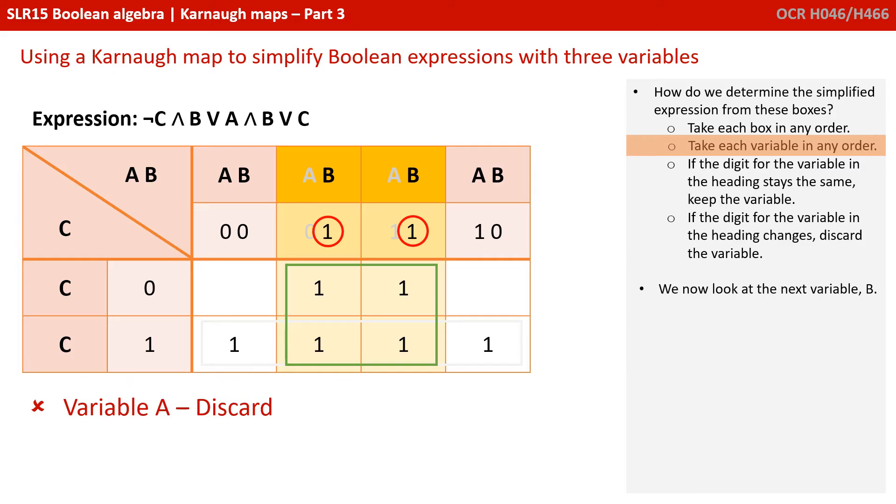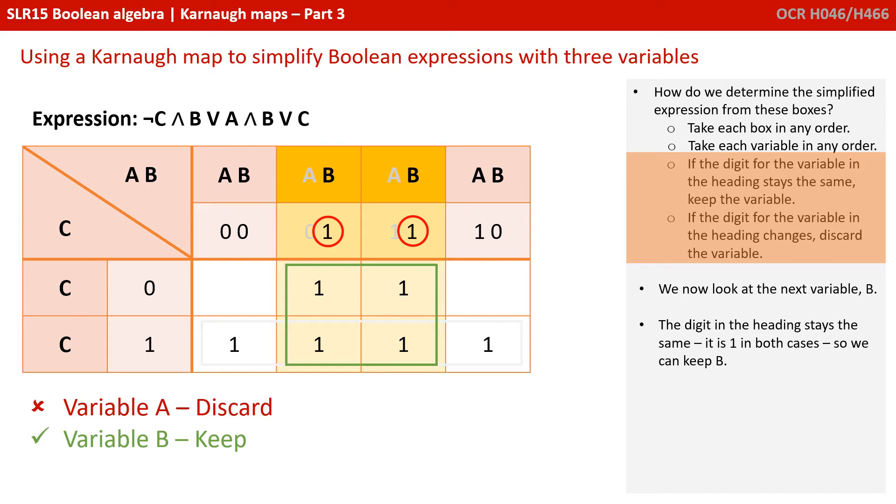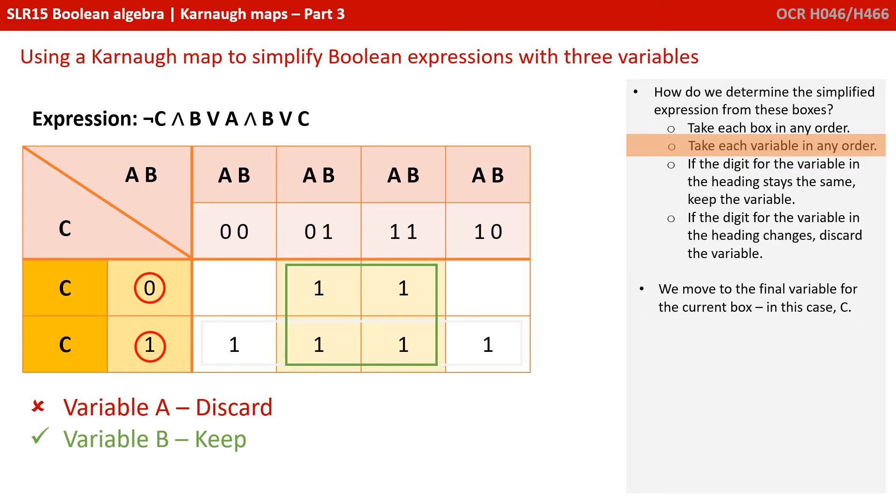Okay, I'm still in the first box, but now I move on to B. Now, this time, the digit in the heading stays the same. There are two columns in this Karnaugh map where we're considering this first box. And in both of those columns, the heading for B is a 1. So, B stayed the same. So, we keep B.